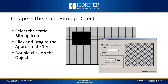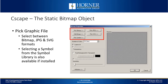Once it's been placed, you can double-click on the object to view the Static Bitmap properties. The first step is selecting which graphic you want to use. You can select JPEGs, bitmaps, and SVG files. When you click on one of the buttons, you'll see a dialog box to select the file that you want to import. If you're using the Symbol library, you can pick your image from the Symbol library, which we'll talk about in more detail later.